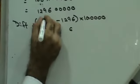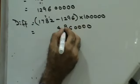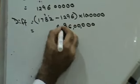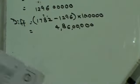Therefore, the difference in sales is 1782 minus 1296 into 1000. What's that? 486 and then three zeros. That was the difference in sales between Chennai and Hyderabad.